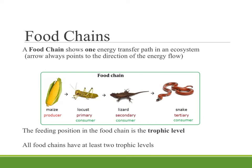A food chain only shows one energy transfer path — one way that energy moves through an ecosystem. If you're looking at a food chain you notice there's an arrow and the arrow is going to point in the direction of the energy flow. It's pointing at who's doing the eating. So in a food chain you start with a producer, you start with where that energy is coming in and being transferred from light energy into chemical energy.